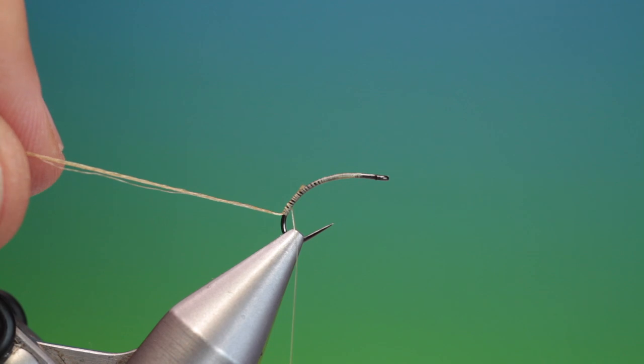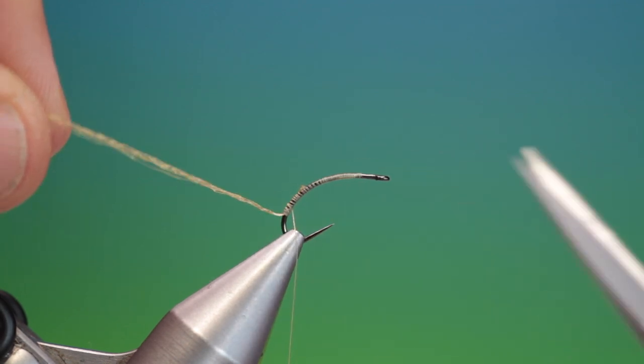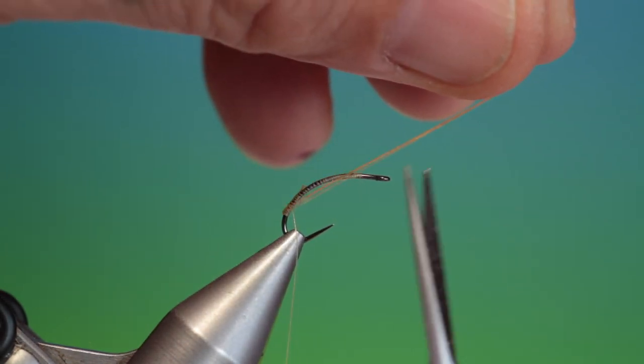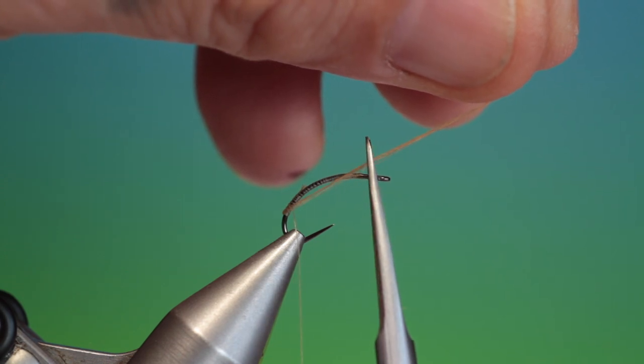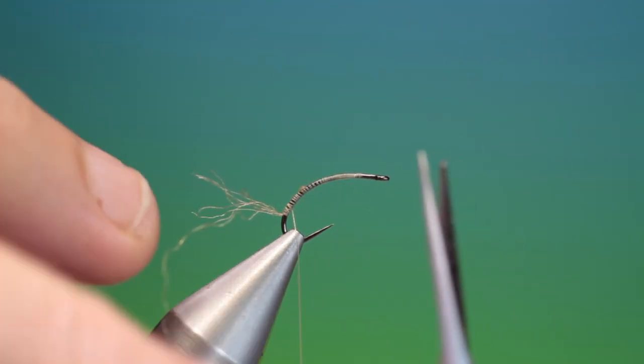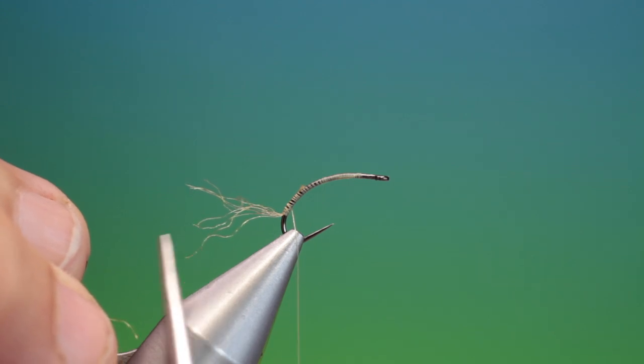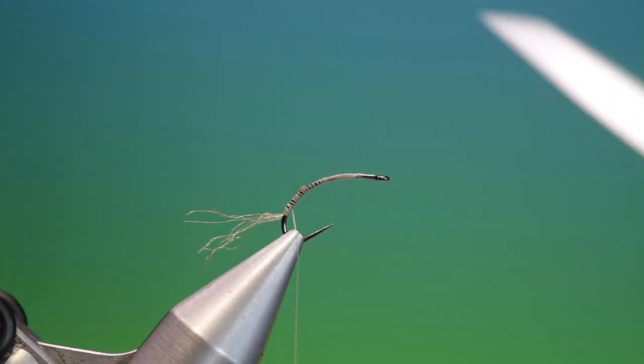And we want this shuck to be about the same length as the hook shank. So we can bend that over, measure, and then trim it off. I've got a little bit longer there. There we go. Perfect.